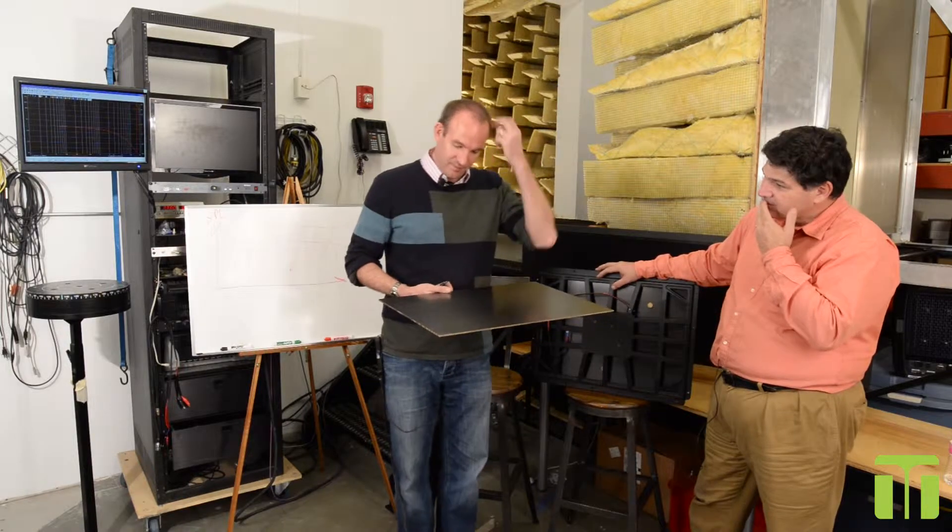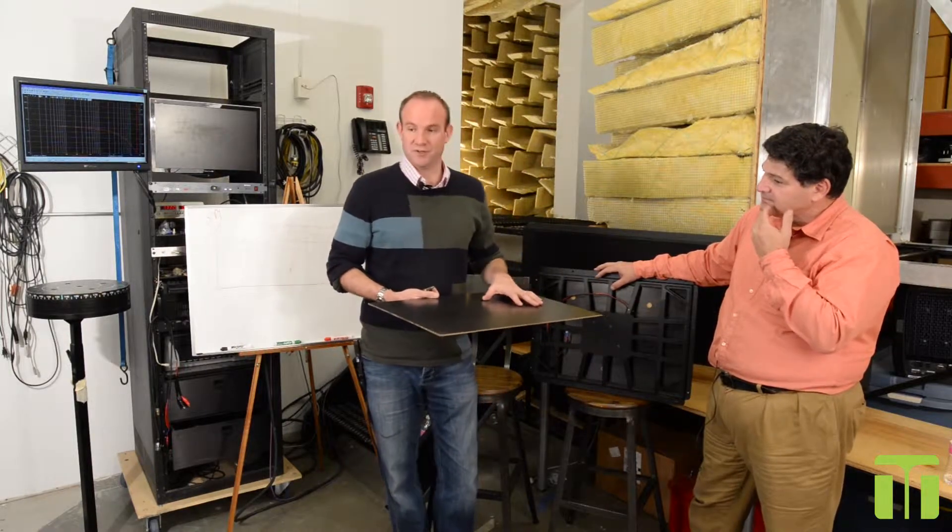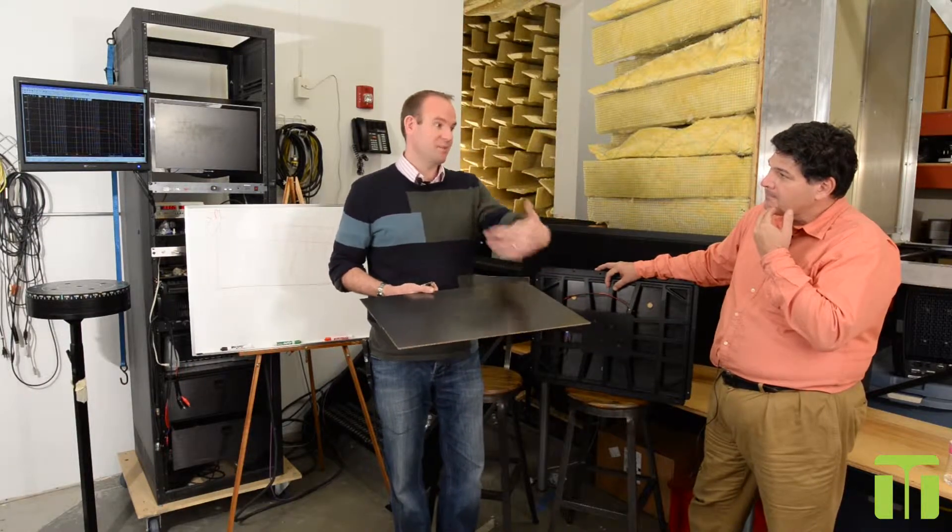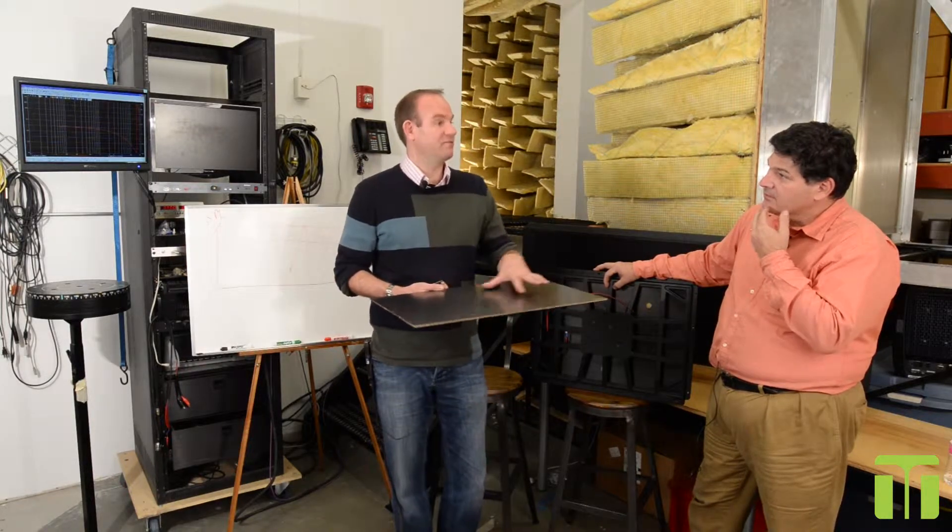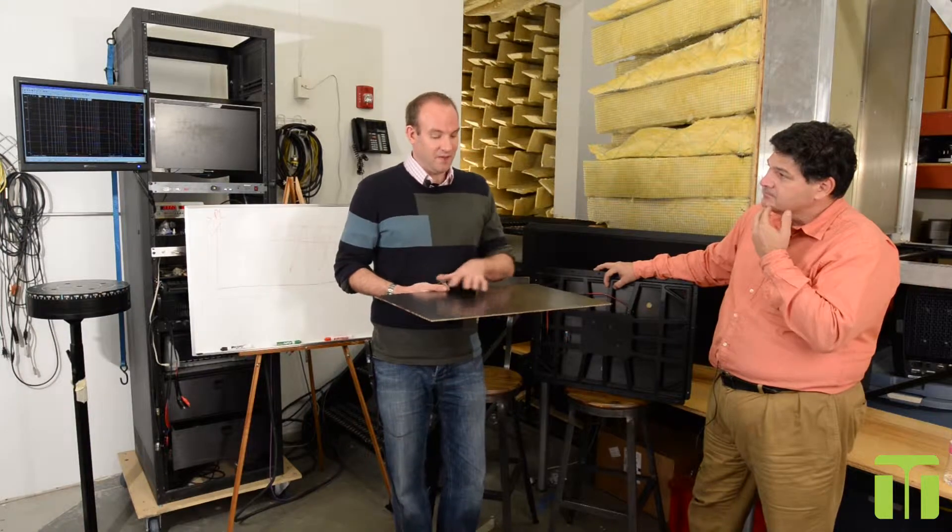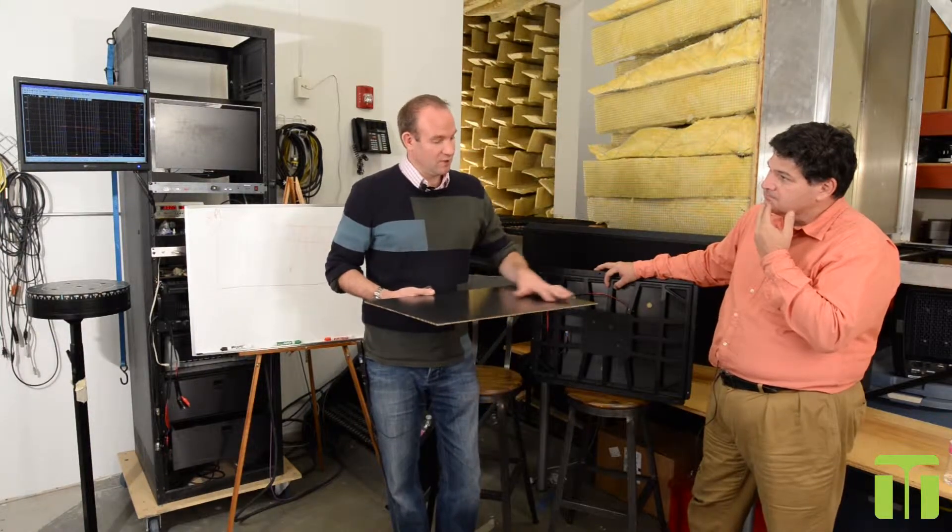We're familiar with wave speed in air being constant with frequency—whether it's high or low frequency, it travels at the same speed. In a panel, a low frequency bending wave travels at a different speed from a high frequency wave, and that introduces some very unique properties.